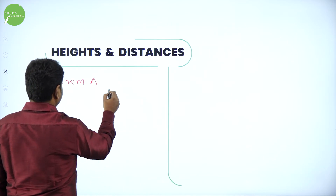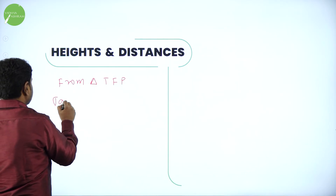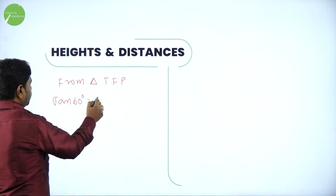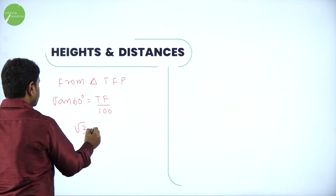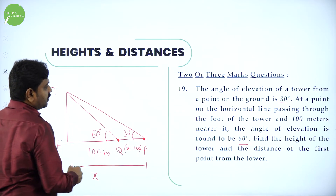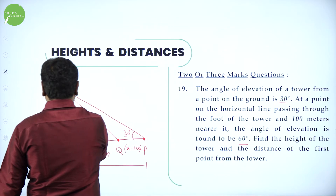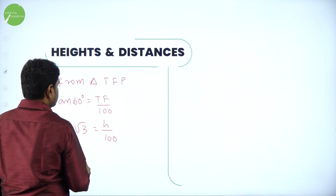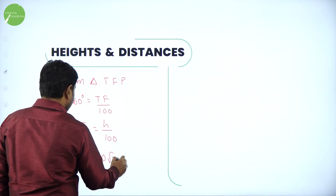From triangle TFQ, apply tan 60. Tan 60 degrees equals TF divided by FQ, where FQ is 100 meters. Tan 60 is root 3, so root 3 equals H over 100. Therefore H equals 100 root 3 meters. This is the height of the tower.